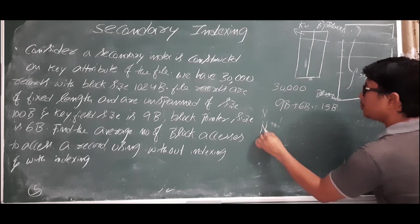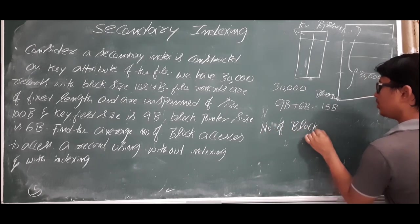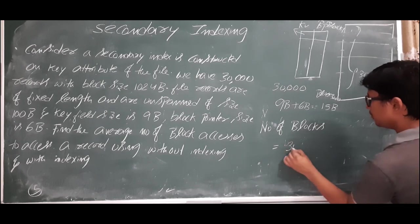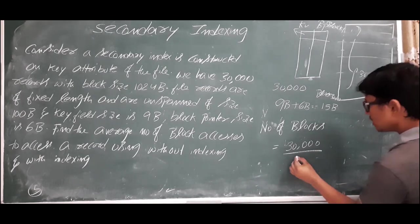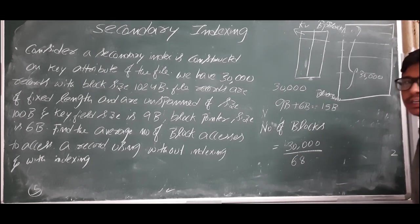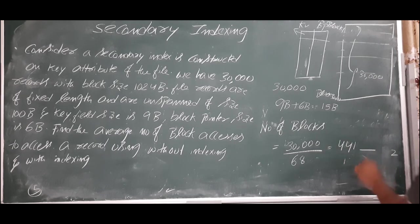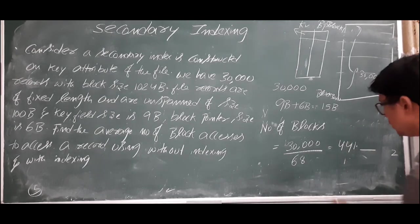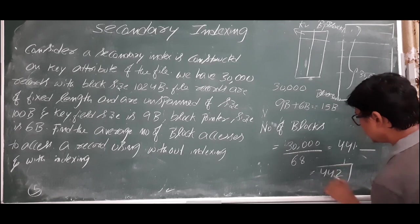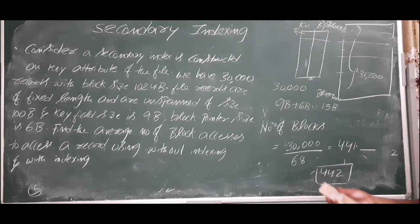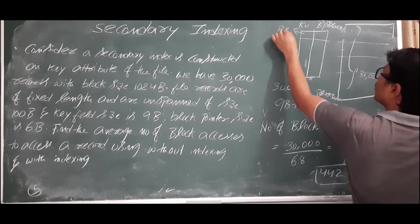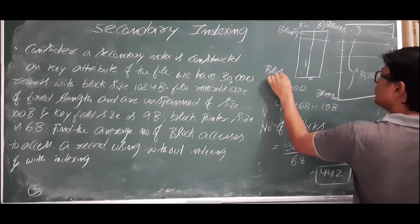Number of blocks in the index file equals number of records divided by number of records per block, which is 30,000 divided by 68, equal to approximately 441 point something. So we need 442 blocks for the index file — block 1 to block 442.